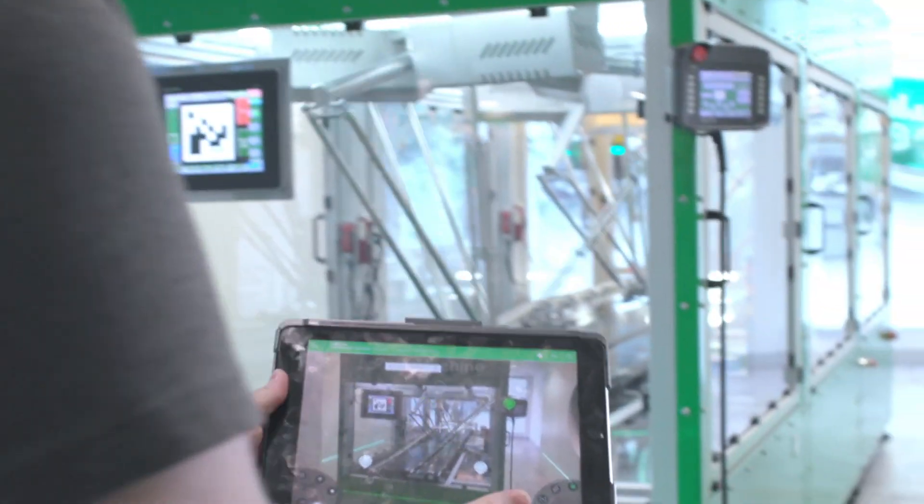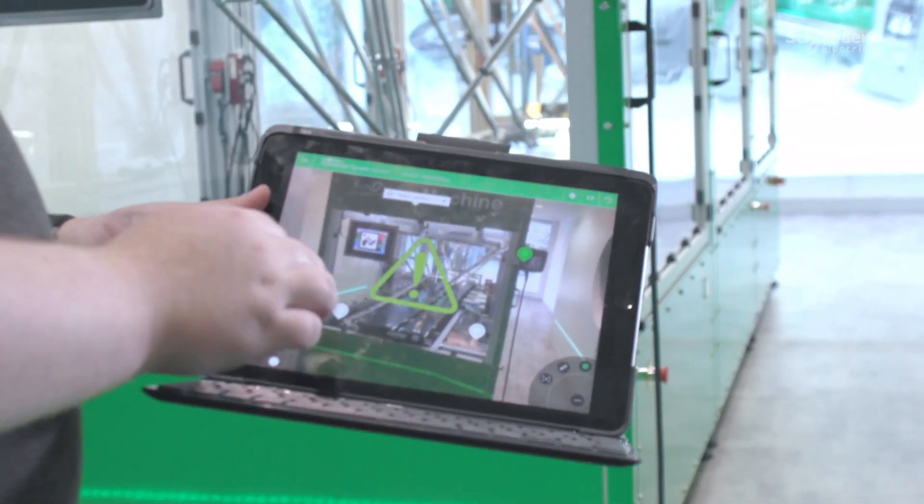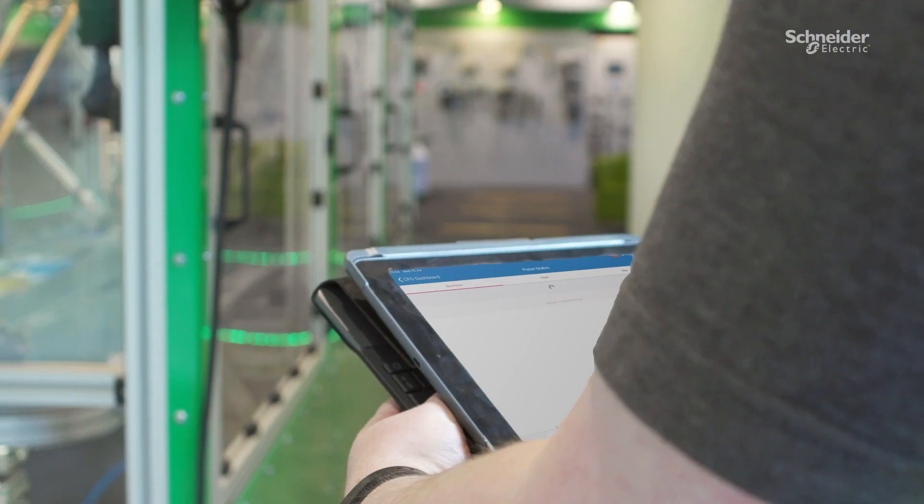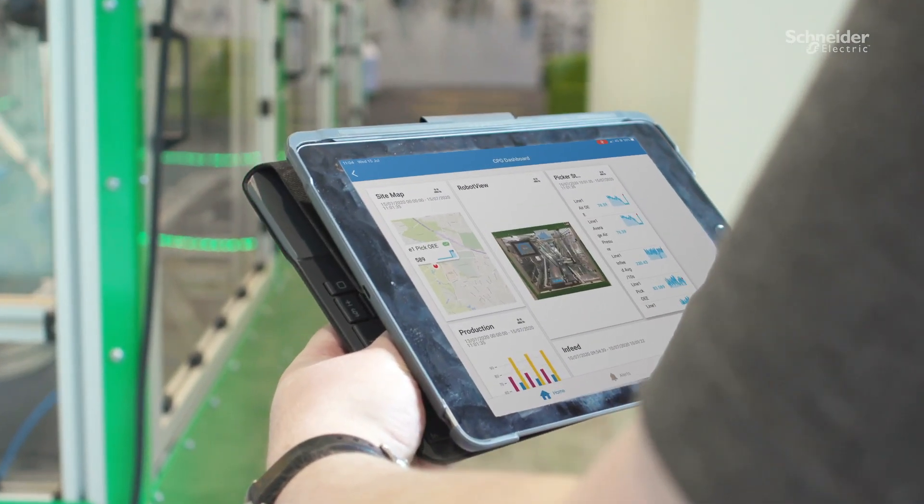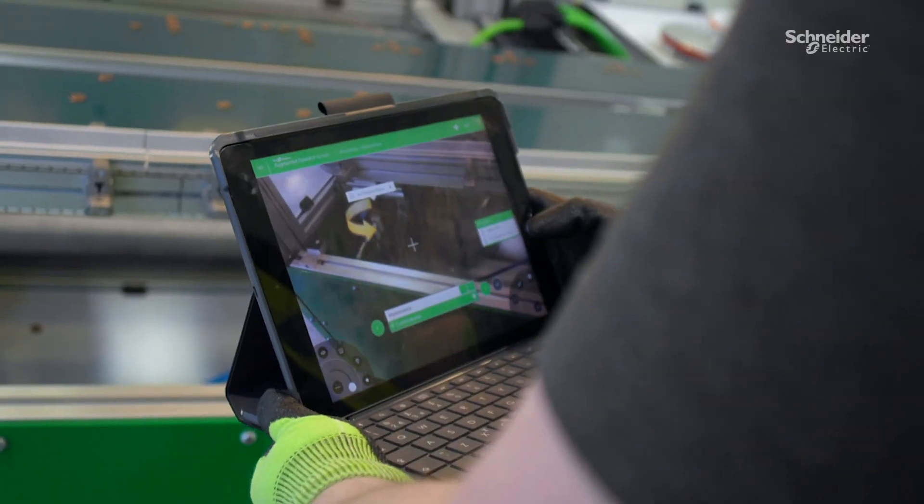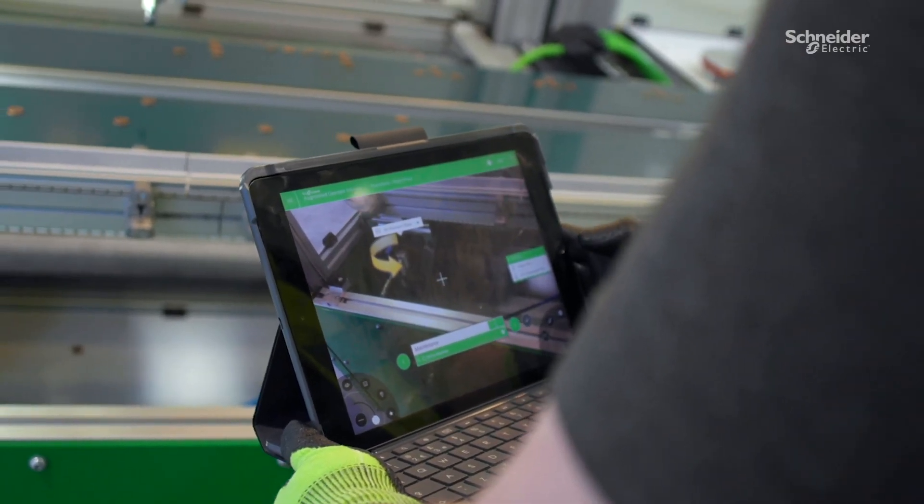It can display real-time production data, KPIs, and maintenance data. The integrated procedure tool takes the engineer through every step to fix the problem, ensuring every maintenance task is completed quickly, correctly, and adhering to all health and safety protocols.